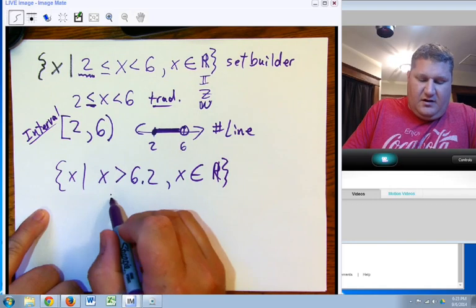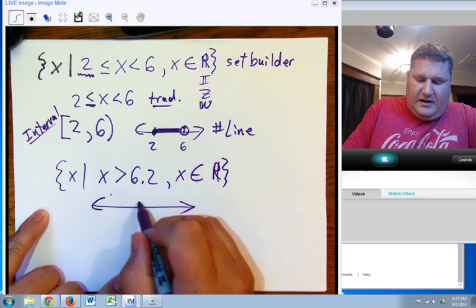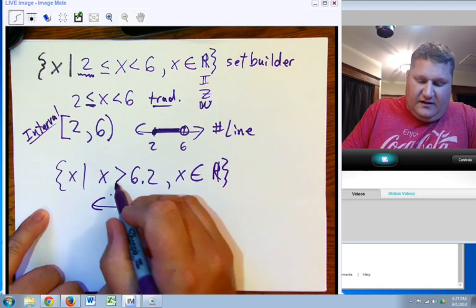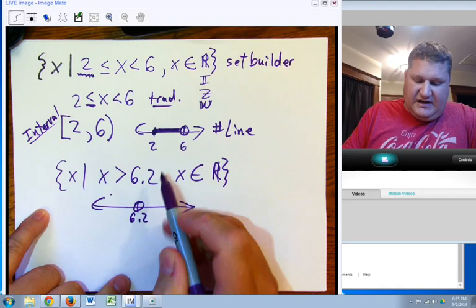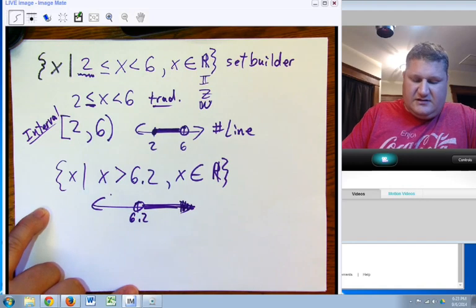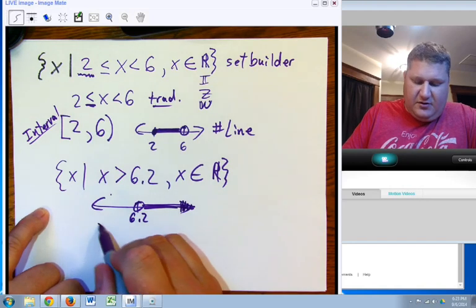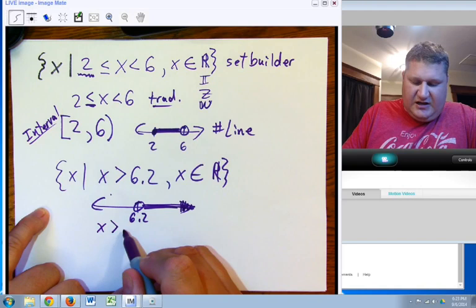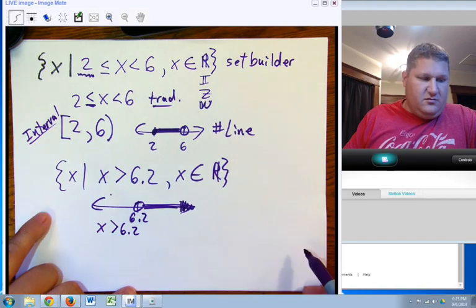We have this. Well, if I put this on a number line, I have 6.2. It's going to be an open circle. Since x is greater than that, I'm going to shade this way. And it works out nicely. Now, obviously, we can put it in traditional notation. x is greater than 6.2. That's not a big deal.